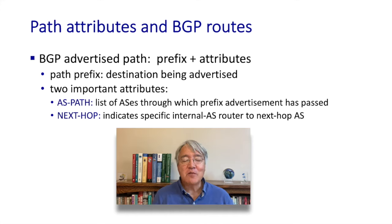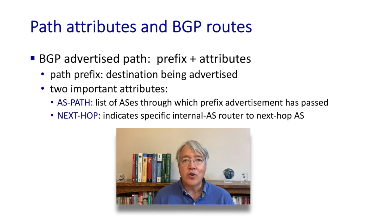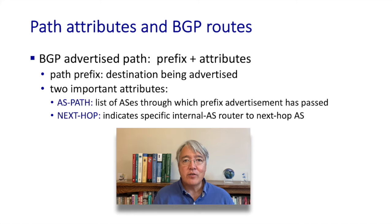Let's begin our study of path advertisement by looking at the path advertisement itself. When a BGP router advertises a path, it advertises two things: first, the destination for that path — the CIDR address, /24 or /16 address of the destination where that path terminates. Second, a set of attributes associated with that path. The most important attribute is the AS path attribute, which enumerates the entire list of autonomous systems that would be passed through in routing from the current network to that destination network.